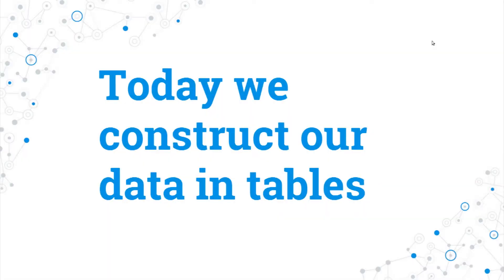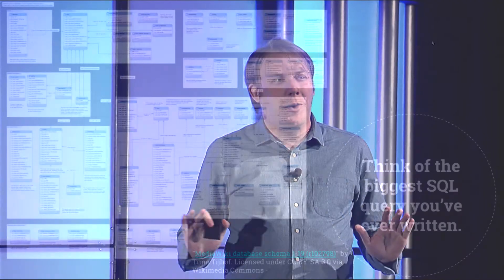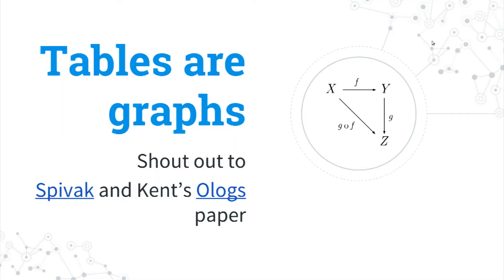But today, of course, we construct our data in tables. And for a second, I want you to think about the biggest SQL query you've ever written, because it probably involves a whole bunch of join tables, a whole bunch of weird statements. When you're actually talking about a many-to-many relationship as per a join table, you're actually talking about a graph. And it turns out that you can actually prove this: tables are graphs, graphs are tables. Everything you can represent in one, you can represent in the other.